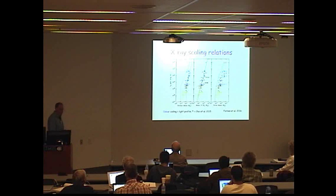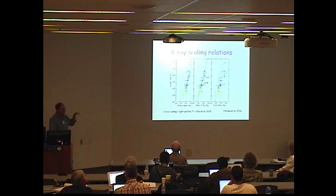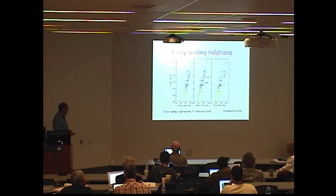The colored points are our galaxies plus a few from the literature. They're coded by their light profile, so these galaxies, the high mass ones, have cores in their optical surface brightness when you look at them with HST. These galaxies down here have cusps.